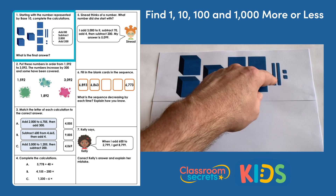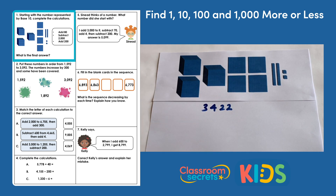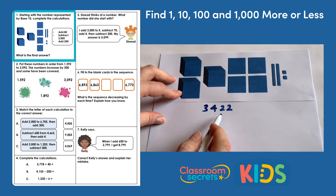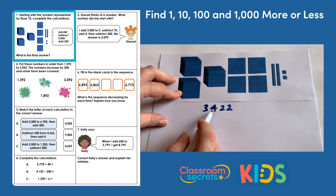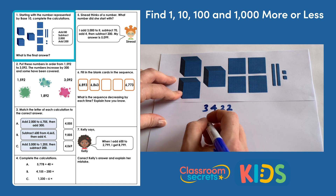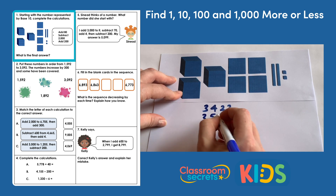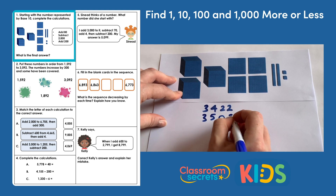Three thousands, four hundreds, two tens, two ones. The first calculation is to add 80, so we're going to add eight tens to three thousand four hundred and twenty-two. That will mean we're going to the next hundreds, so it'll become three thousand five hundred and two.